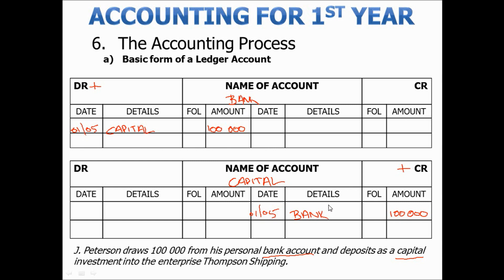Then we need to remember to indicate the folio number — we'll just use a fictitious number in this case, let's call it number 1. Hopefully this gives you a better perspective of what a ledger account looks like once you've entered all the details on both sides, debit and credit.